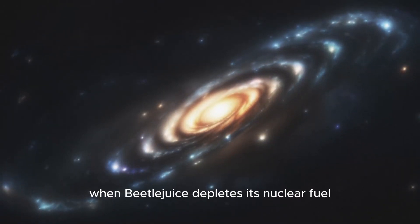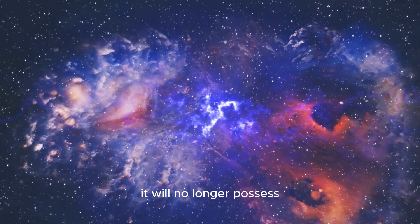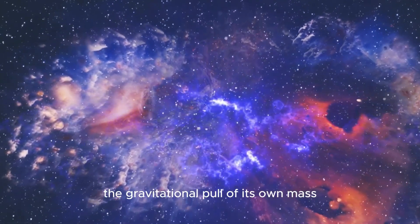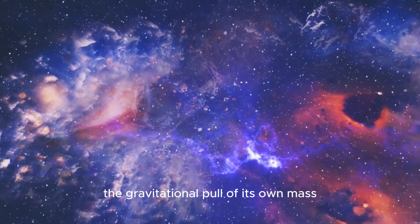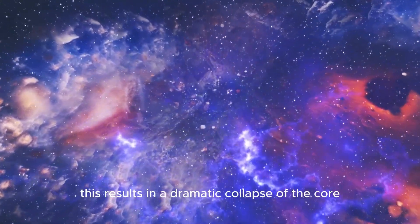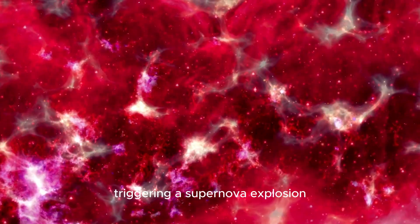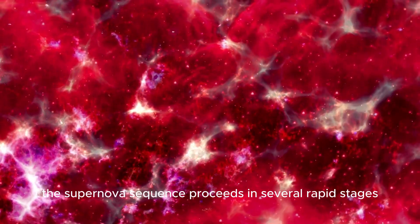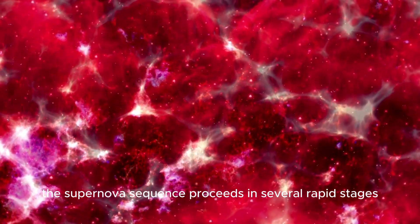When Betelgeuse depletes its nuclear fuel, it will no longer possess the energy needed to counteract the gravitational pull of its own mass. This results in a dramatic collapse of the core, triggering a supernova explosion. The supernova sequence proceeds in several rapid stages.